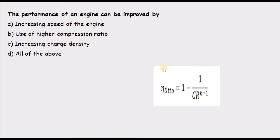Third option — increasing charge density: when we increase the charge density, the amount of air, and therefore oxygen, available inside the combustion chamber increases. With more air we can burn more fuel, and therefore performance increases. So the correct answer is D — all of the above.